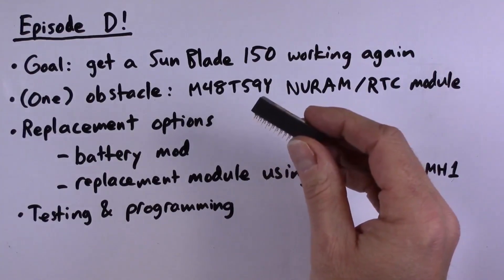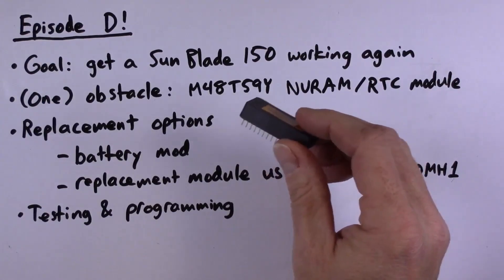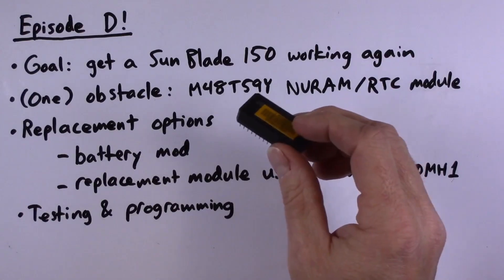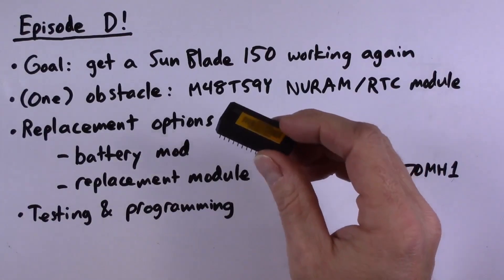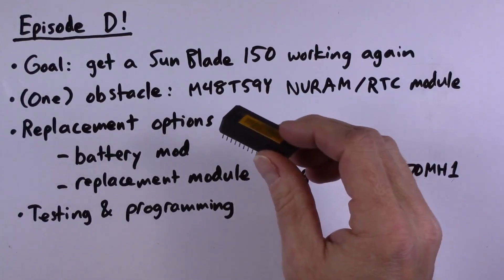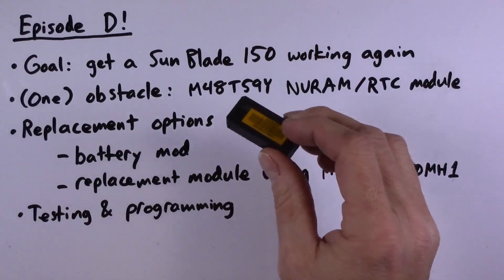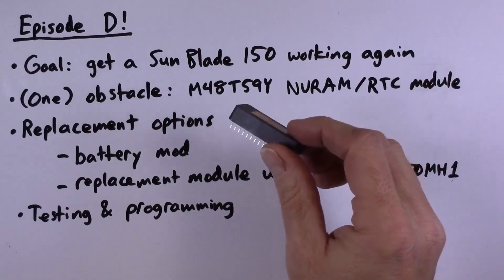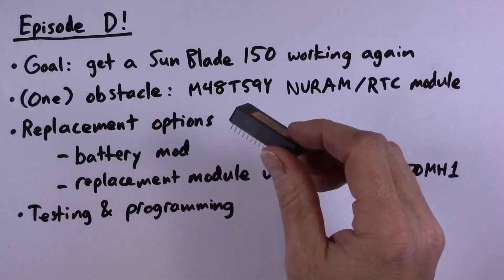Sun workstations store important configuration information in these, such as the Ethernet address and other boot parameters and boot options. So when these go bad, the system can't retain its settings, and it doesn't work very well because you would have to reprogram those settings every single time you boot the machine. Obviously that's not a great situation.